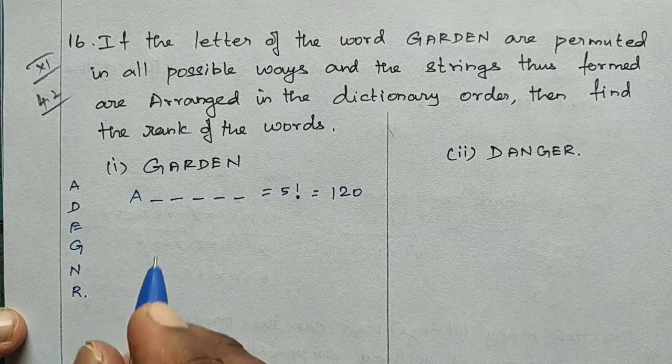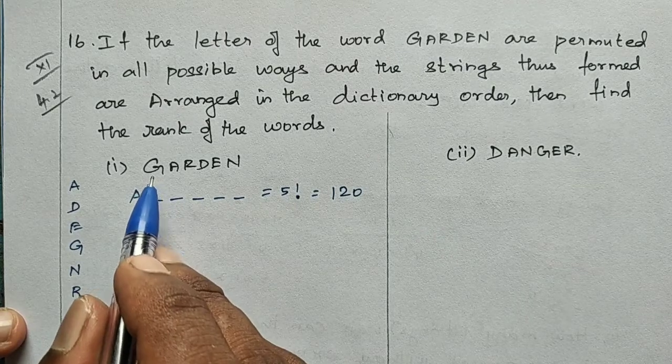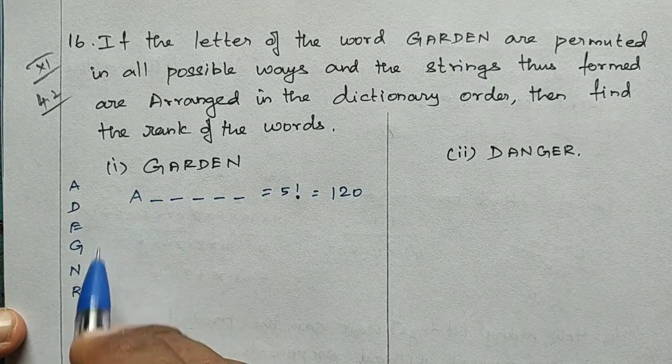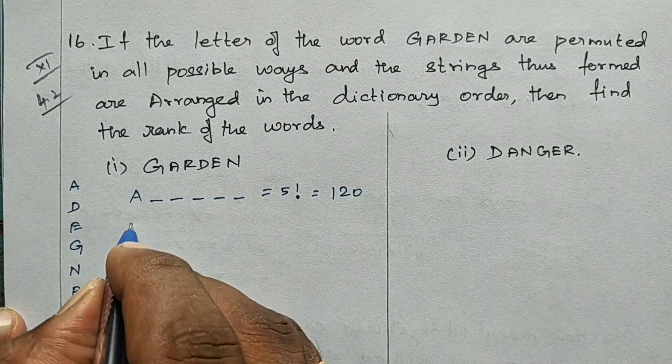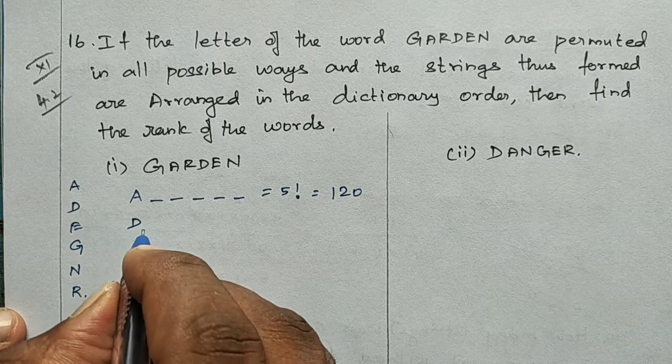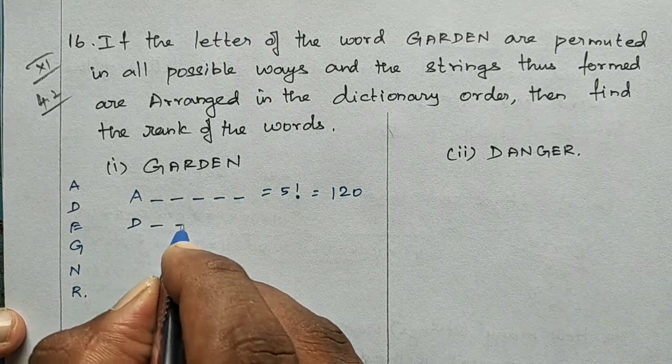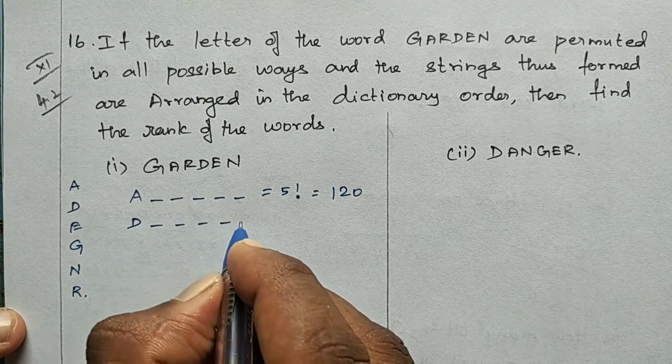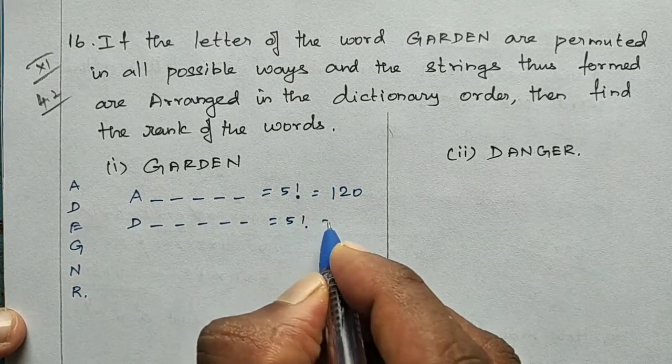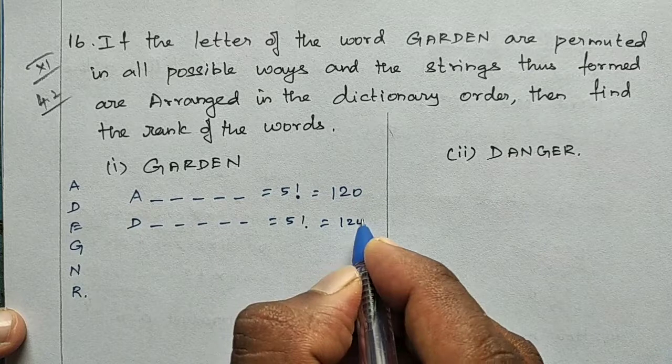Words starting with A: 5 factorial = 120. Words starting with D: 5 factorial = 120. Words starting with E: 5 factorial = 120. Now we consider words starting with G.